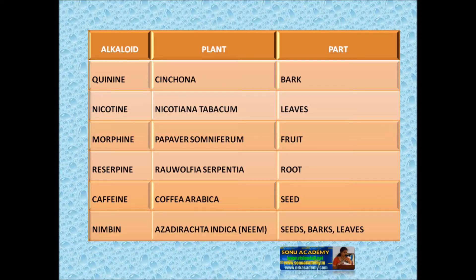Quinine is present in the Cinchona plant, in the bark. Nicotine is present in the tobacco plant, in the leaves. Morphine is present in Papaver somniferum, in the fruit. Reserpine is present in Rauwolfia serpentina, in the root. Caffeine is present in the coffee plant, in the seed. Nimbine is present in the neem plant, in the seeds, bark, leaves, etc.